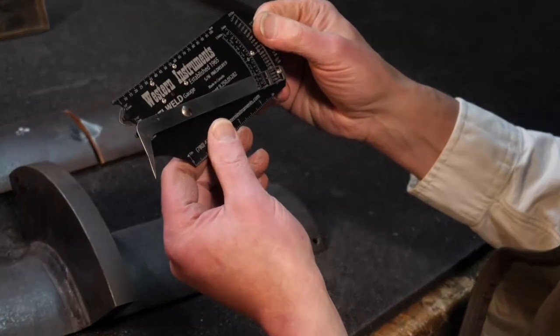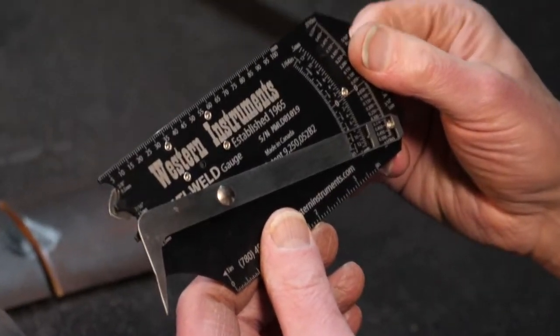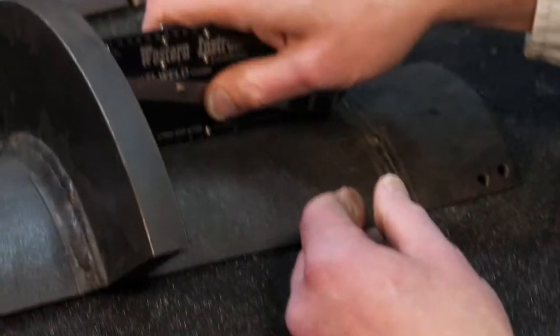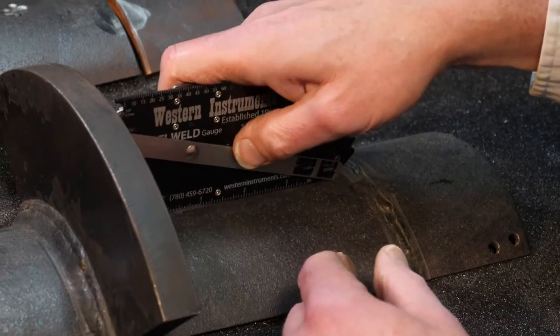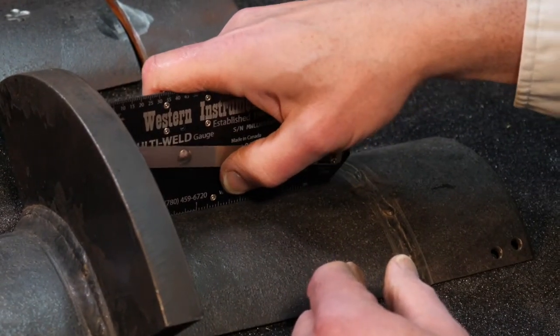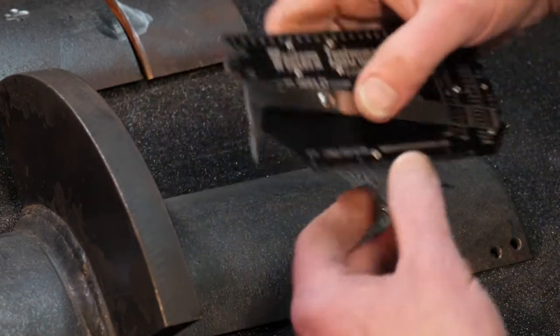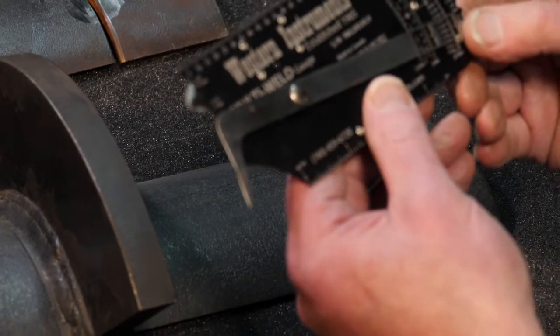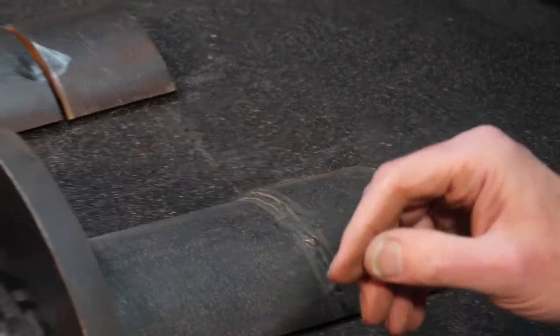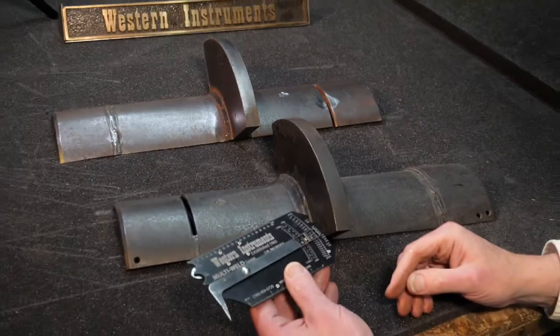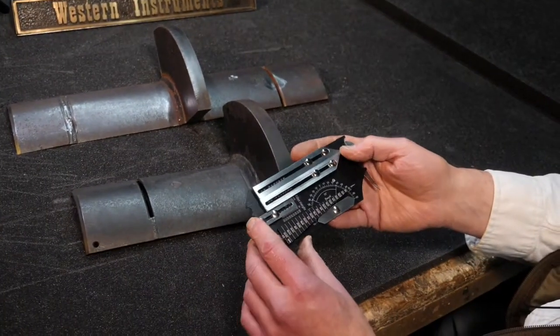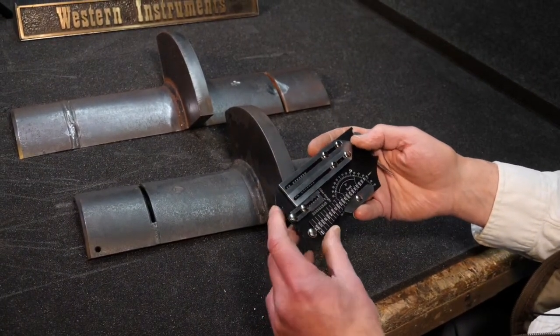That says it's about 425 thou. What is over here? About the same. So there we go, that's the multi-weld gauge and that's how you're going to use it.